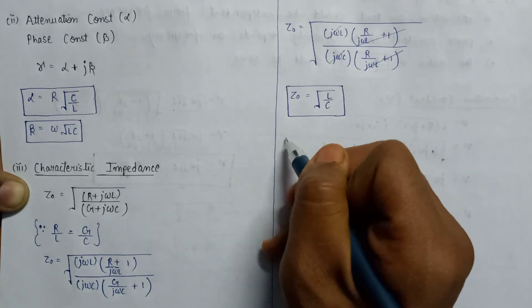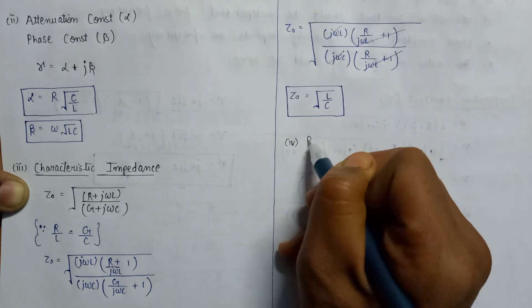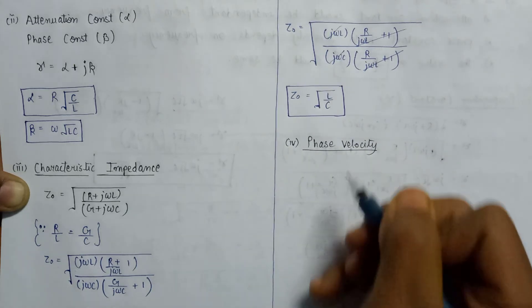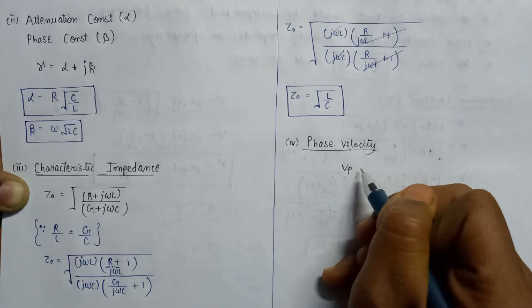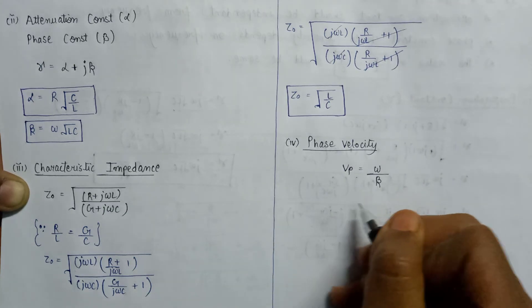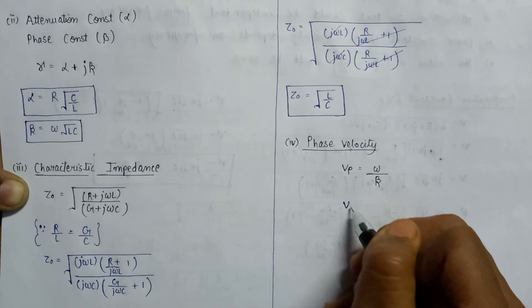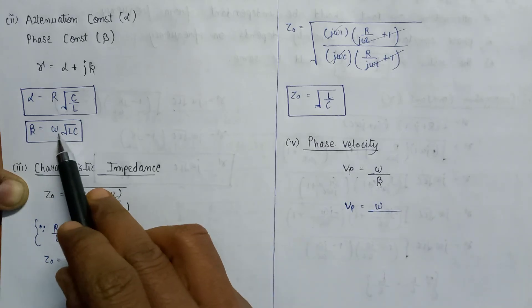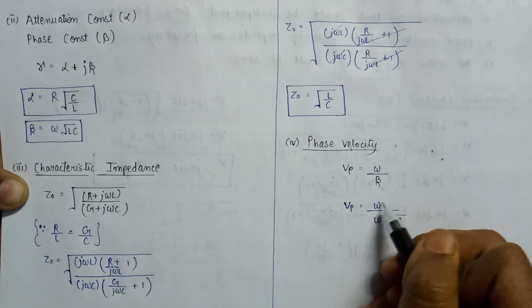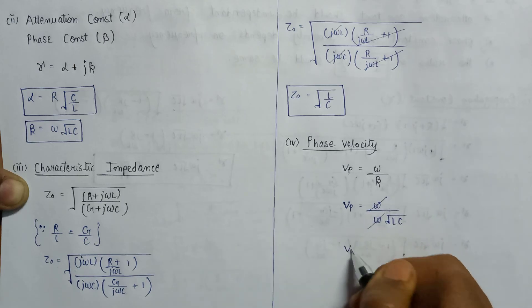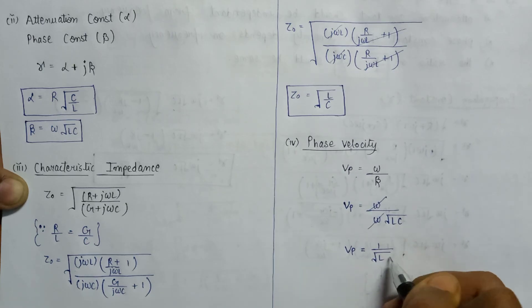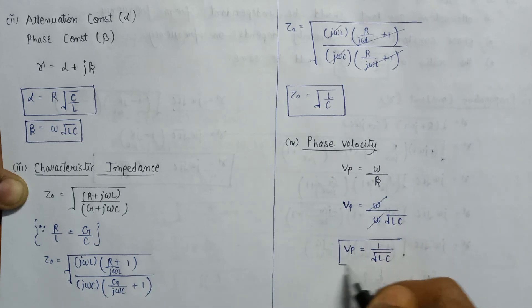Let us now discuss phase velocity. Phase velocity is given by Vp = ω/β. Substituting the value of β = ω√(LC), we get Vp = ω / (ω√(LC)). The ω cancels, giving the final expression for phase velocity: Vp = 1/√(LC).